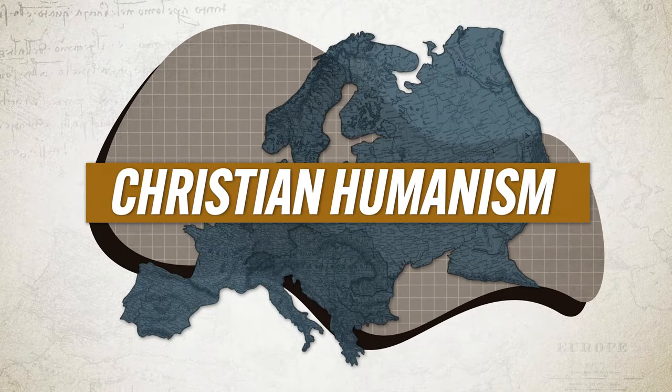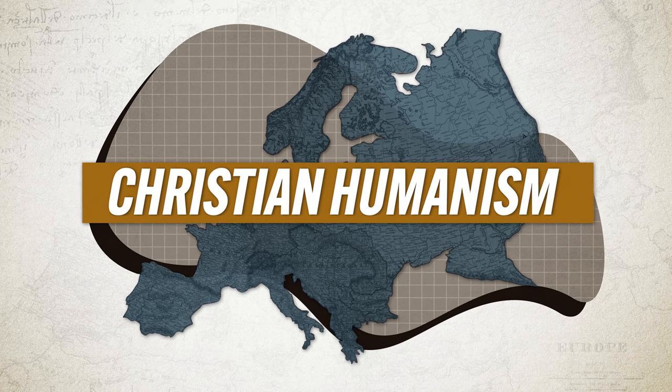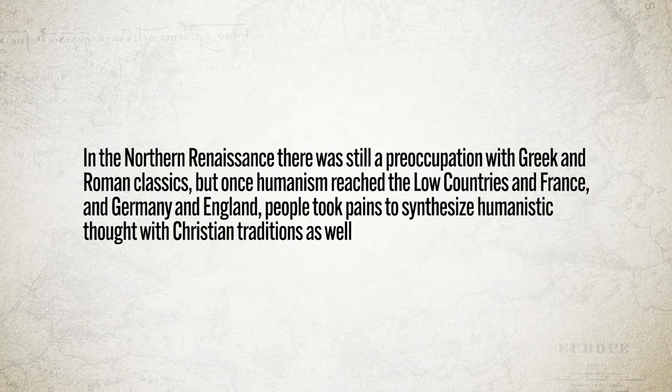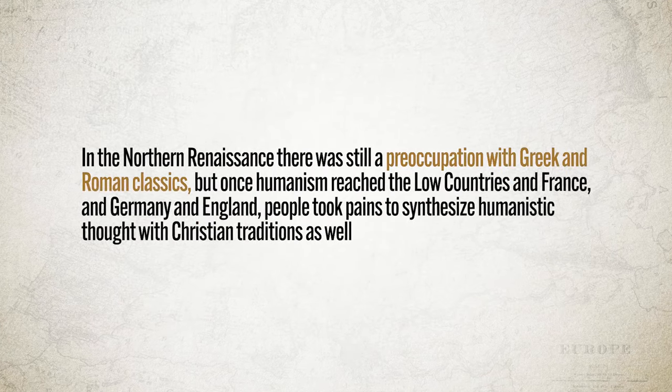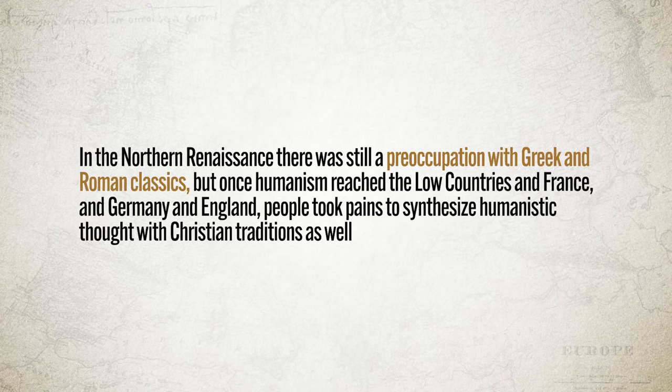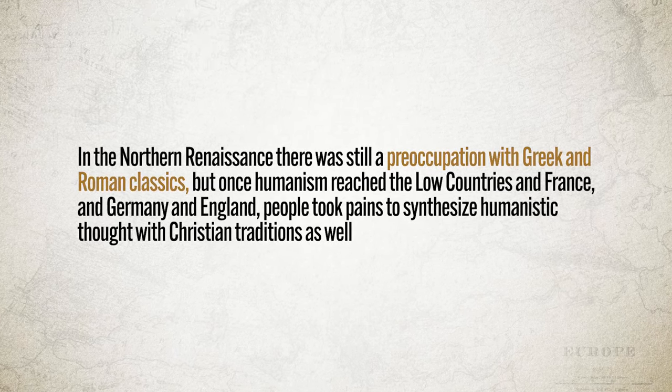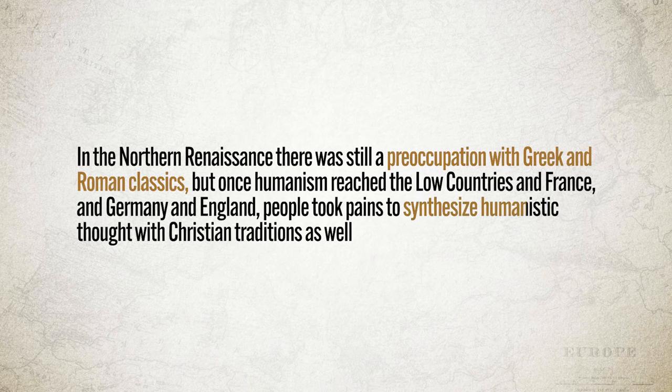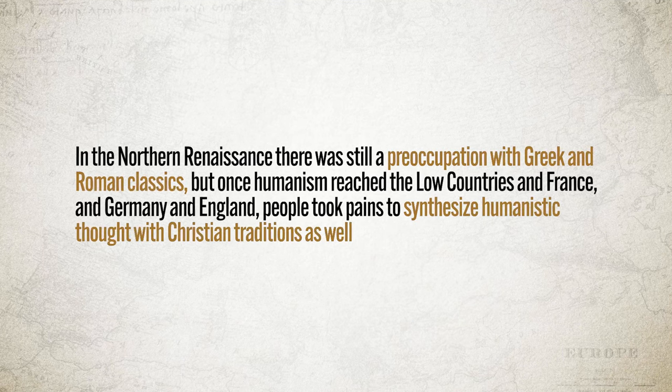Now, as humanism spread north from Italy, it also changed emphasis. In the Northern Renaissance, there was still a preoccupation with Greek and Roman classics, but once humanism reached the Low Countries, France, Germany, and England, people took pains to synthesize humanistic thought with Christian tradition as well. This meant that in addition to seeking out Greek and Roman classics, Northern Renaissance thinkers also sought out early Christian writings, especially from folks like Saint Augustine and Jerome.